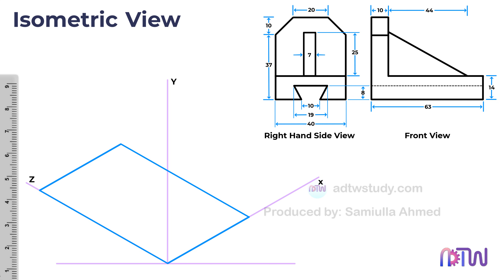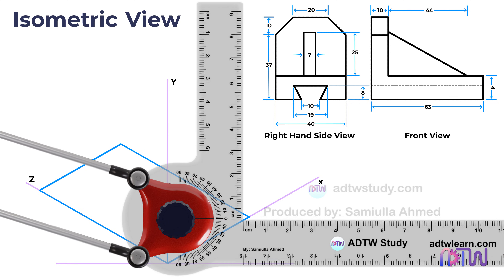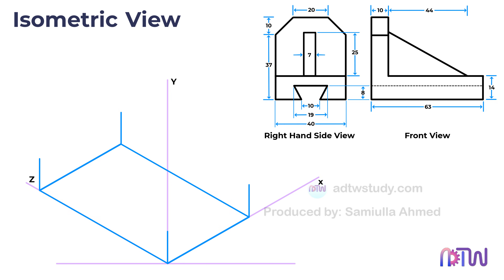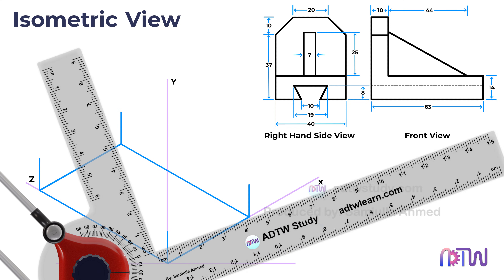We now have the outline of the base. In the given front view, the thickness of the base is mentioned as 14 millimeters. To represent this thickness, we will increase the height of the base by 14 millimeters. Using a drafter, draw vertical lines of 14 millimeters in length from all corners of the base rectangle, then join the endpoints of these lines to complete the construction of the base with the increased thickness.